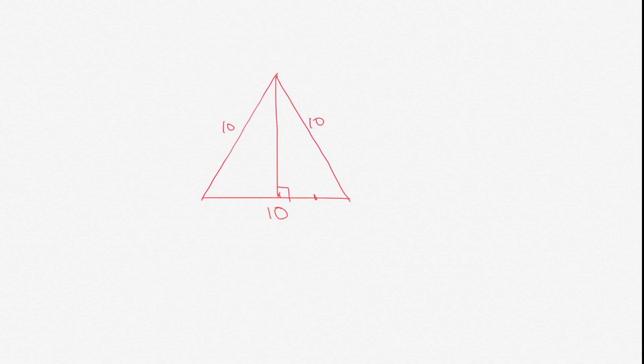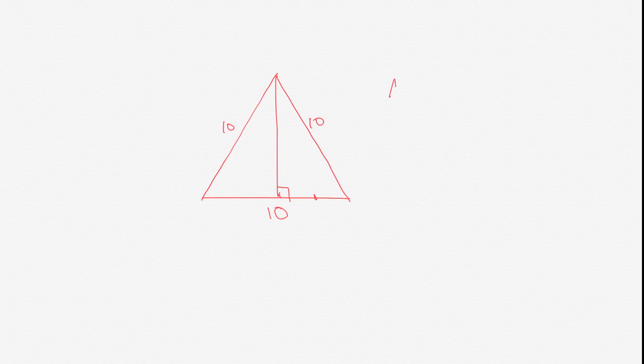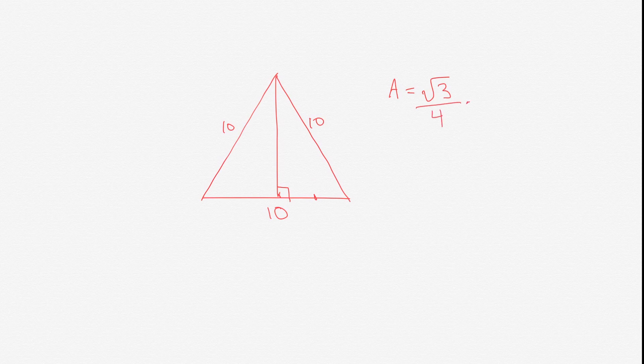There is another way to calculate this. There is a formula for an equilateral triangle if you could memorize it. The area of an equilateral triangle equals the square root of three divided by four times the side squared.